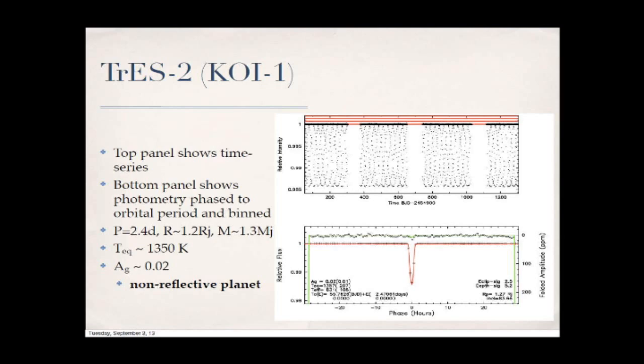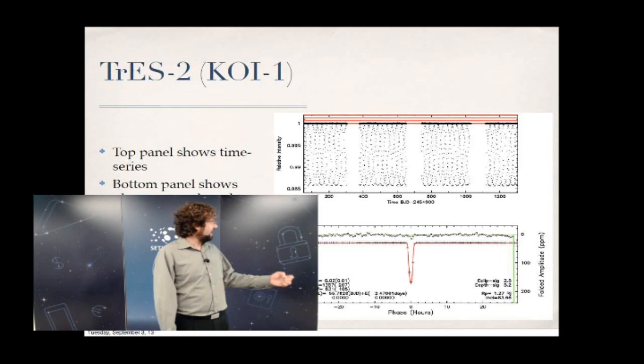A question about the gaps in the top-right panel: Kepler rotates every three months to keep its solar panels pointed toward the sun, and the field of view rotates as well. If there's a missing detector on board, every fourth quarter you won't observe that target anymore. So KOI-1/TrES-2 was on a part of the field of view that's missing data every fourth quarter — that's why the gaps appear.